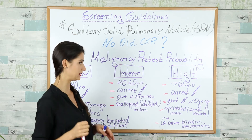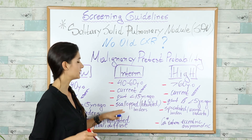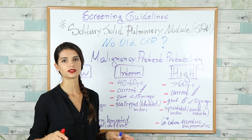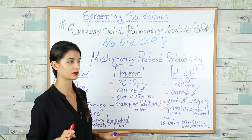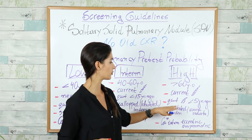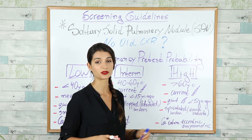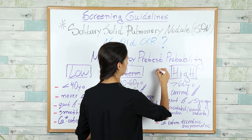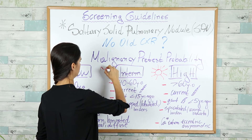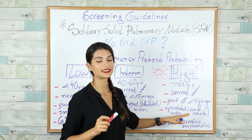Patients at intermediate risk are between 40 and 60 years of age, currently smoking or quit less than 15 years ago, and the nodule borders are scalloped or lobulated — synonymous terms that frequently appear on the exam. Patients at high pre-test probability are over 60 years of age, current smokers or quit less than 5 years ago, and the nodule borders are spiculated, also called corona radiata — which looks like rays from the sun. Calcifications in high pre-test probability nodules are eccentric and asymmetric.